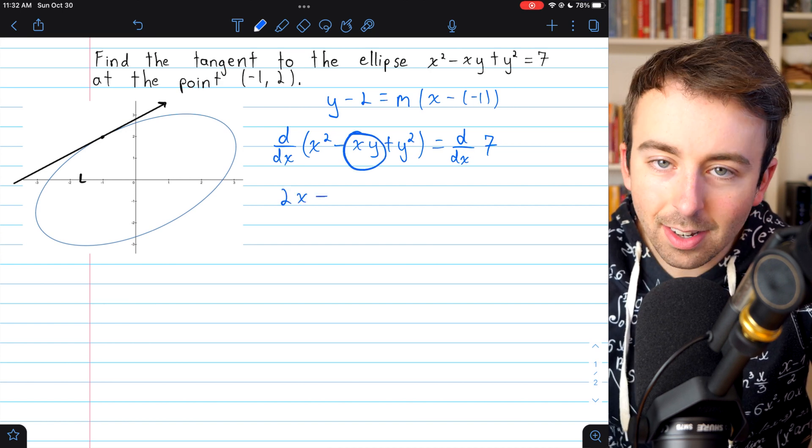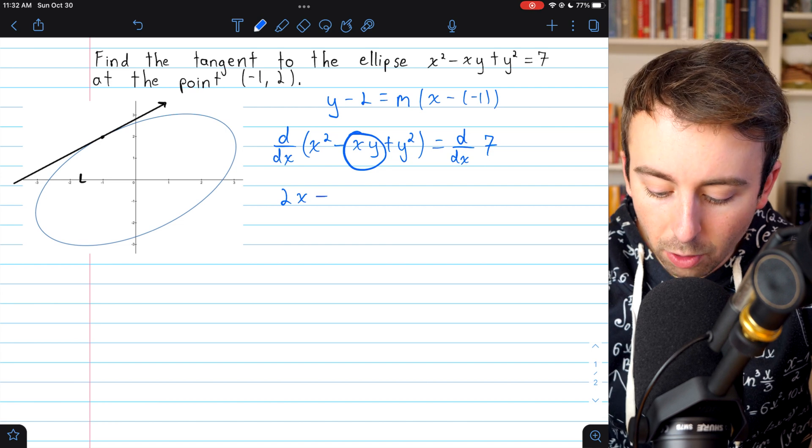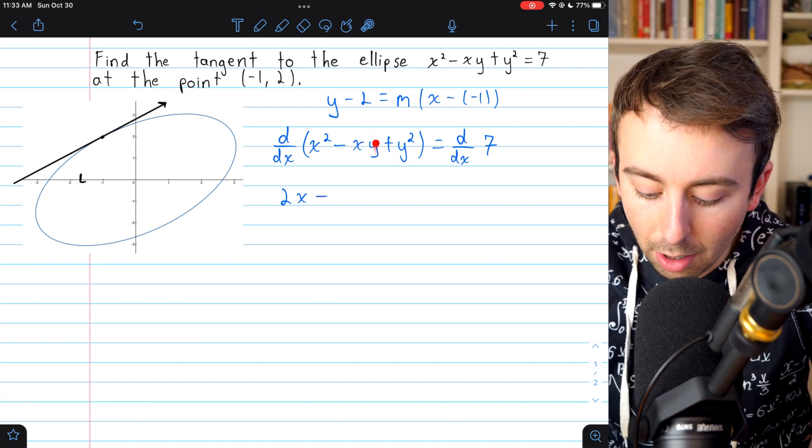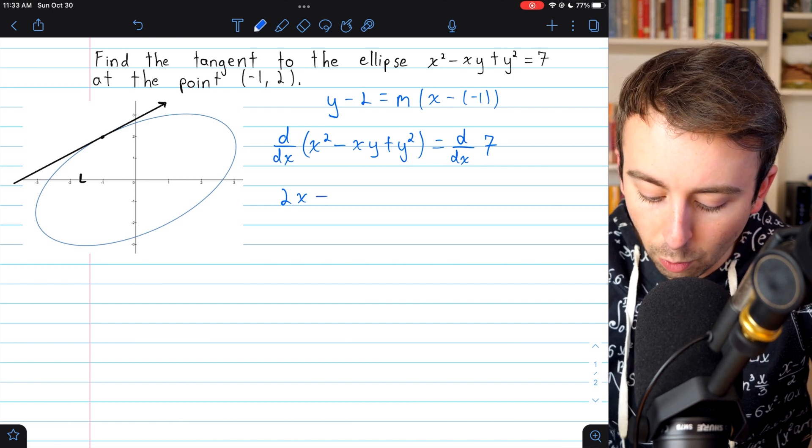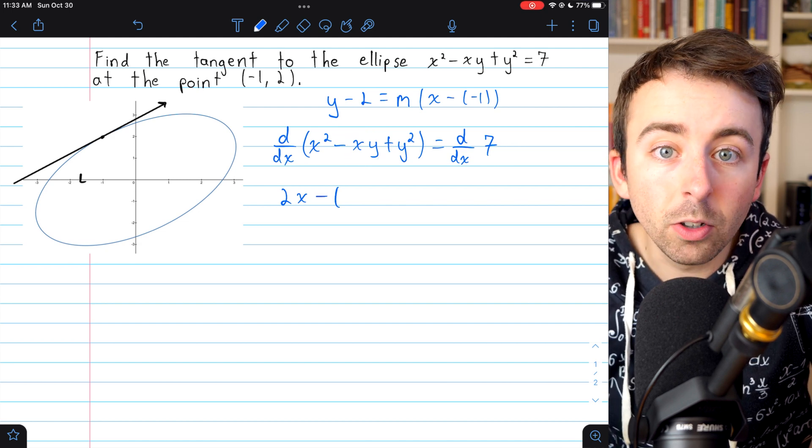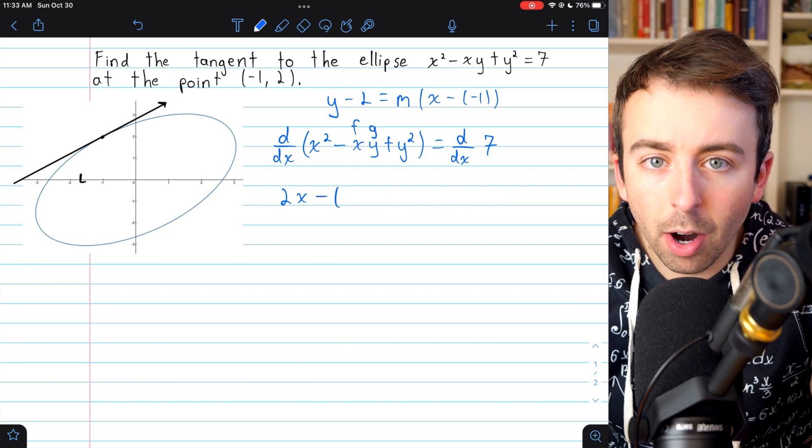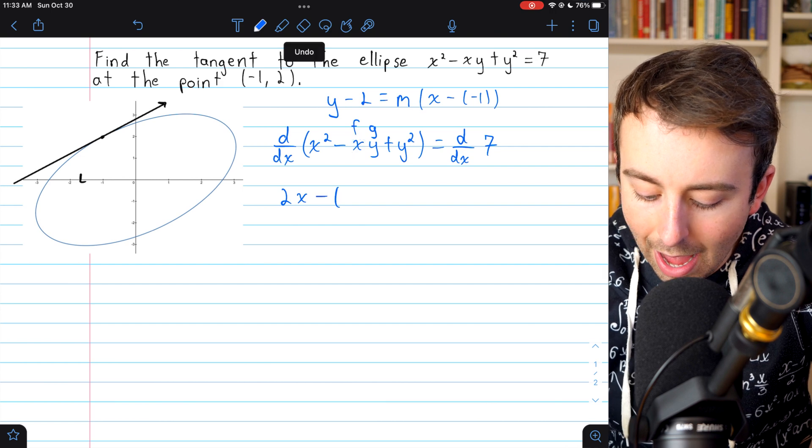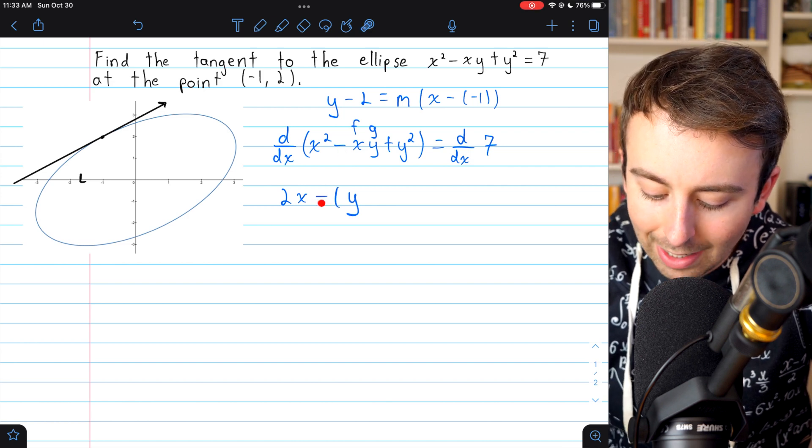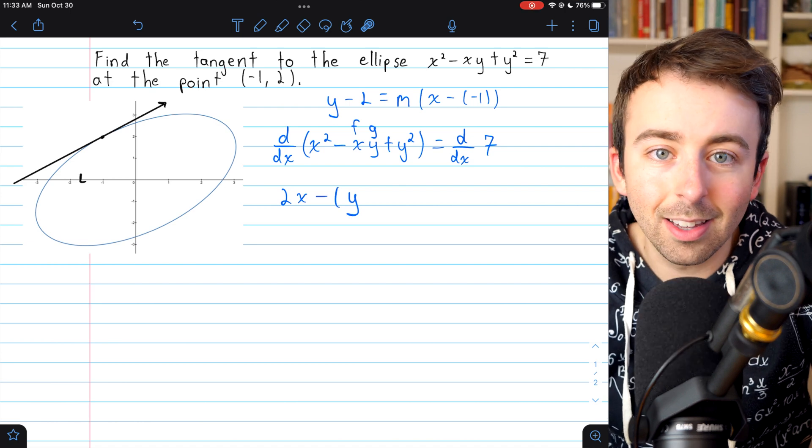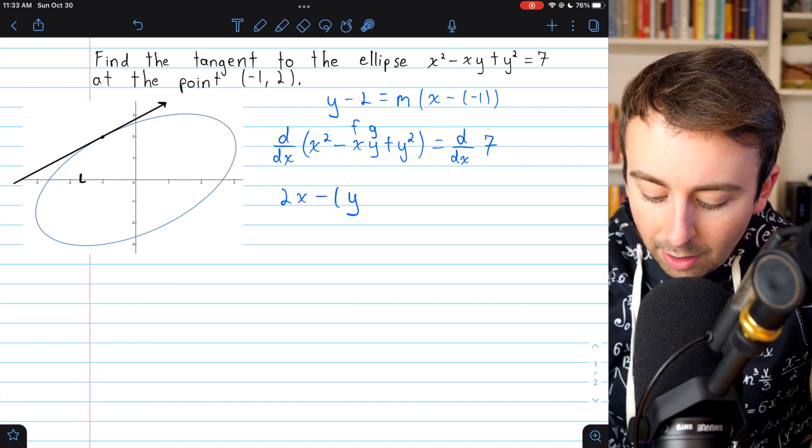Then we have x times y. And remember that y is some implicit function of x. So here we have a function x times another function y. We need to use the product rule. The product rule tells us that the derivative of xy will be f'g. We'll say that f is x and g is y. So f'g is just the derivative of x, which is 1, times g, which is y. Notice as well that I'm leaving this minus out here and I've just opened up the parentheses for the derivative. This is just to be careful and make sure that I don't make any sign errors. So this is f'g.